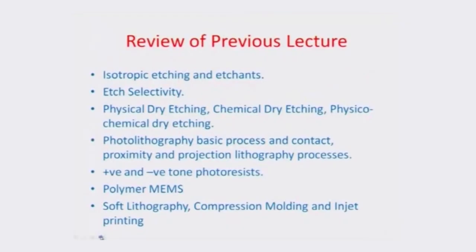Let us do a quick recap of what we did in the last lecture. We talked about various etchants and isotropic or homogeneous etching techniques. We mentioned about etch selectivity and selective layers. We also briefly talked about physical dry etching, chemical dry etching, and physico-chemical dry etching, where use of plasmas would enhance the directionality or anisotropicity of the etching process. We also described photolithography — the basic process of mask aligning with a wafer coated with photoresist — and different types of lithography like contact, proximity, and projection lithography processes, where we discussed positive and negative tone photoresists and how they cross-bond or debond to create features on the surface.